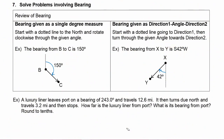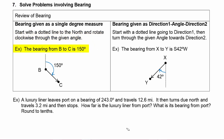First, let's do a quick review of bearing. Remember that we have learned two types of bearing. The first is bearing given as a single degree measure. You start with a dotted line to the north and rotate clockwise through the given angle. For example, the bearing from B to C is 150 degrees — starting from B, we make a dotted line to the north, turn through 150 degrees, and then draw the vector out to point C.